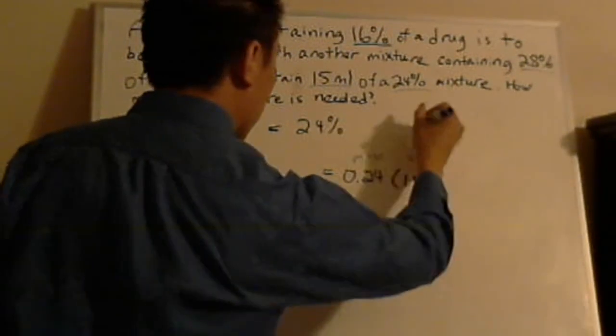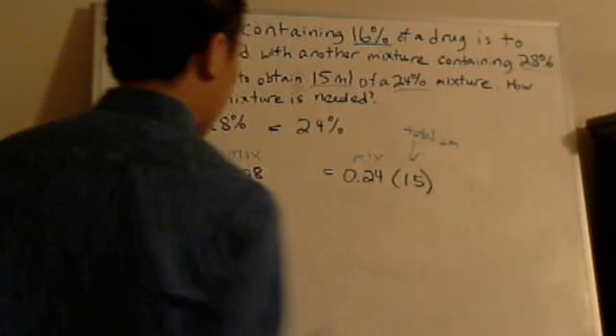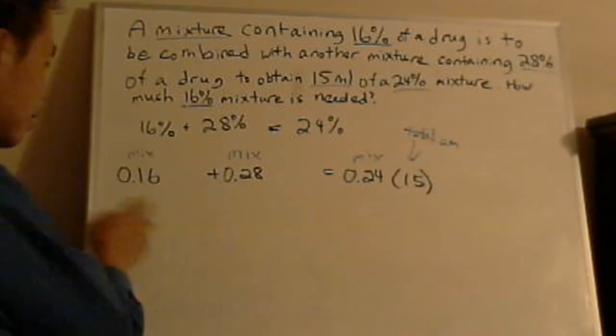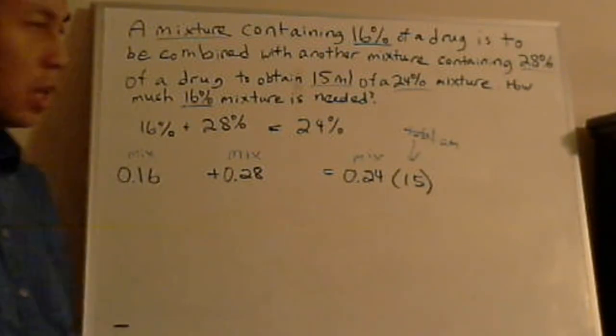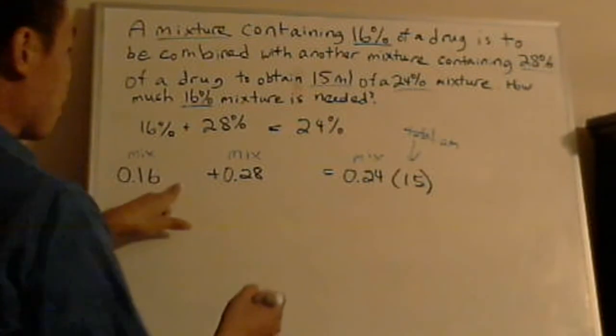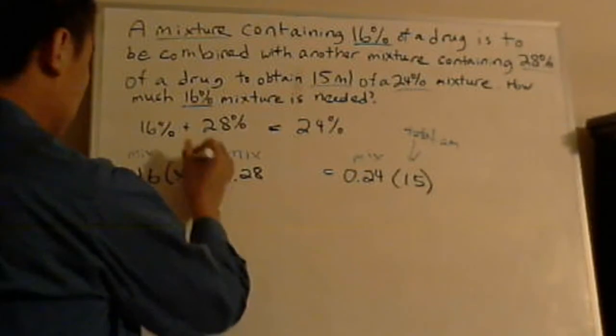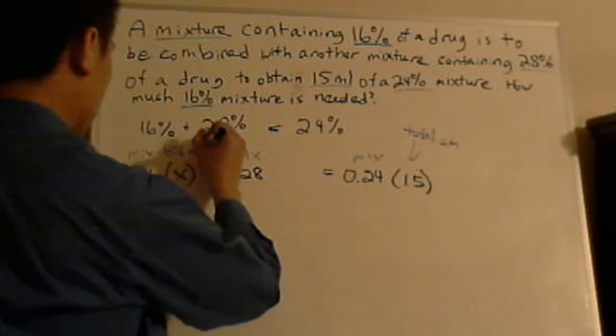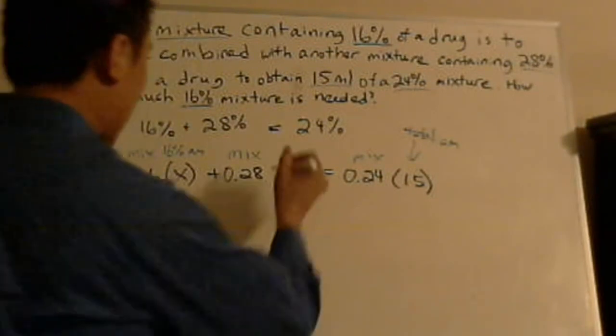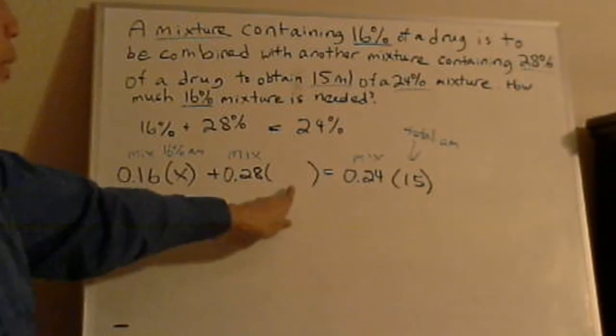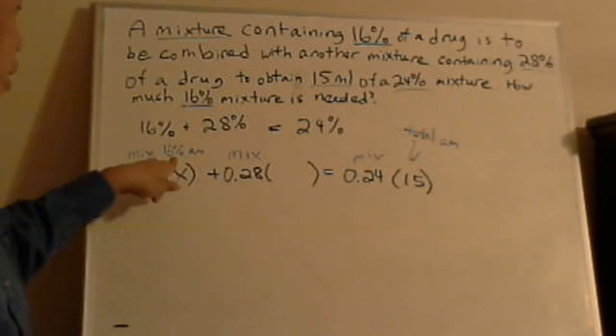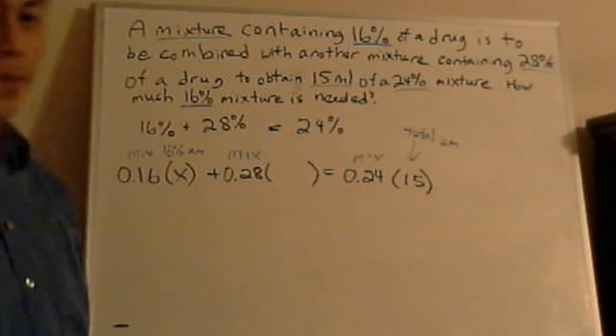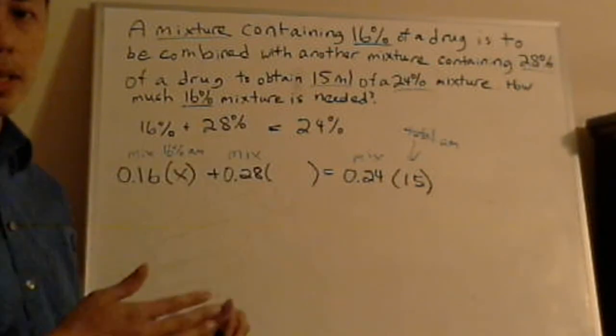So I'll write total amount. So now you know it's 15 milliliters total. How do you express the 16% and the 28% if you know it's 15 total? Well, how about this? We can let the amount of the 16% mixture be x. And I'll write it right here that this is the 16% amount. So if that's the case, how do I express the 28%? How do I do the 28% if I know x is represented as the 16% and I know the total is 15 milliliters? How do I express x? It's kind of like that half empty, half full kind of thinking. How do you find out where the middle is?